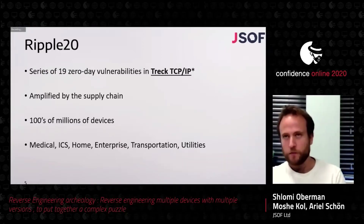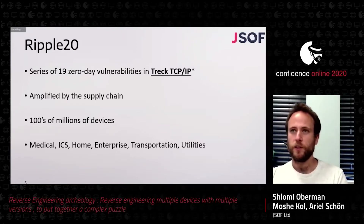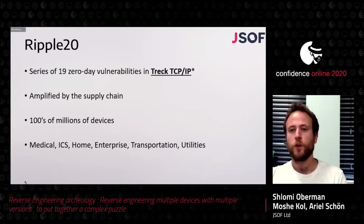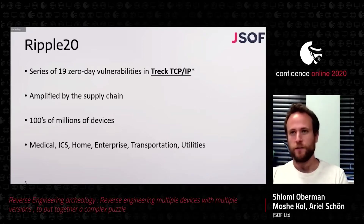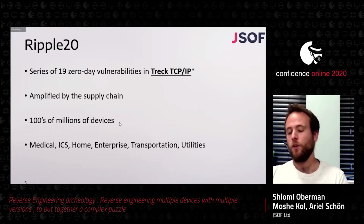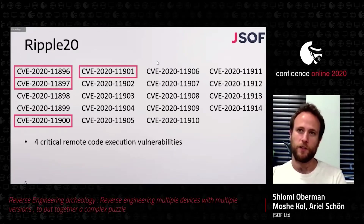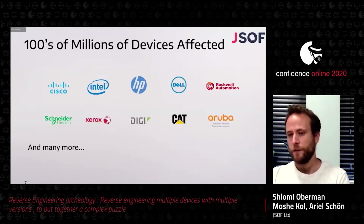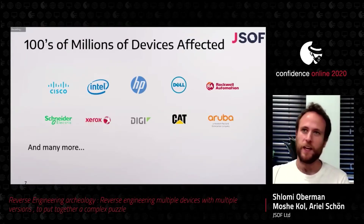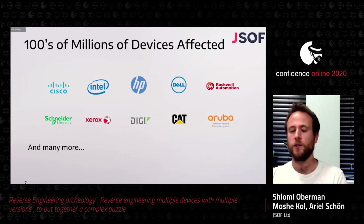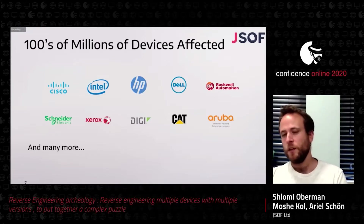Ripple 20 is a series of 19 zero-day vulnerabilities that JSOF reported in a TCP/IP stack — a very common, proprietary TCP/IP stack. The vulnerabilities were amplified by the supply chain: it was sold to vendors who sold it forward, reaching all kinds of devices. We estimate hundreds of millions of devices were affected. Four CVEs are critical remote code execution vulnerabilities; the rest have varying degrees of severity. Vendors affected range from HP printers to UPS devices, industrial devices, networking devices, and medical devices.